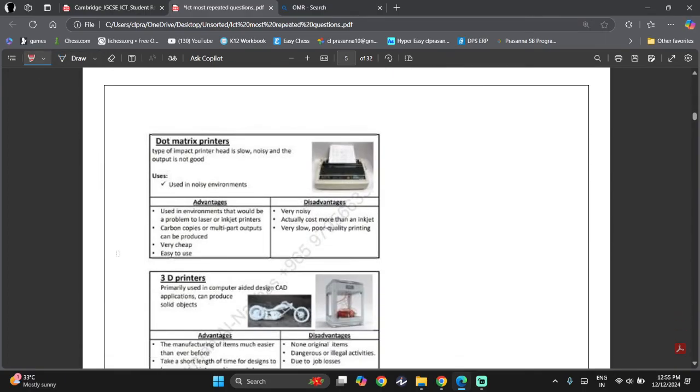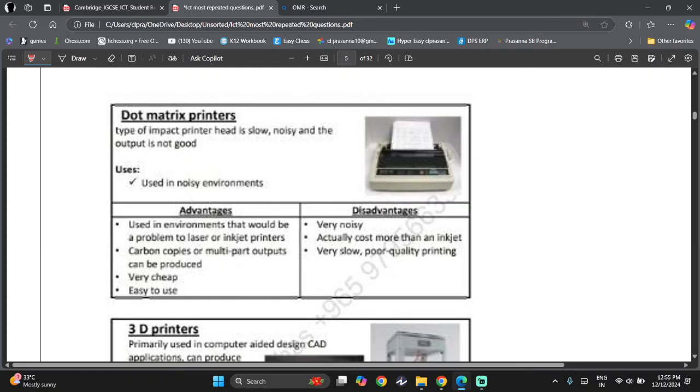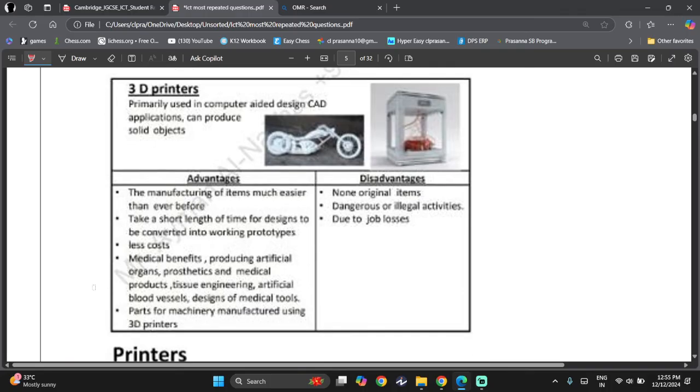Now let's look at the different types of printers. So now first we have dot matrix printers. Now this is an impact printer. Head is slow, noisy, and output is not that good. Okay. So these are used in noisy environments. The advantages and disadvantages, you can read them. Just pause the video. Then we have 3D printers, which are used in computer-aided design. Now this is a key word over here. Computer CAD application and can produce solid objects. Pause the video, read the advantages and disadvantages.